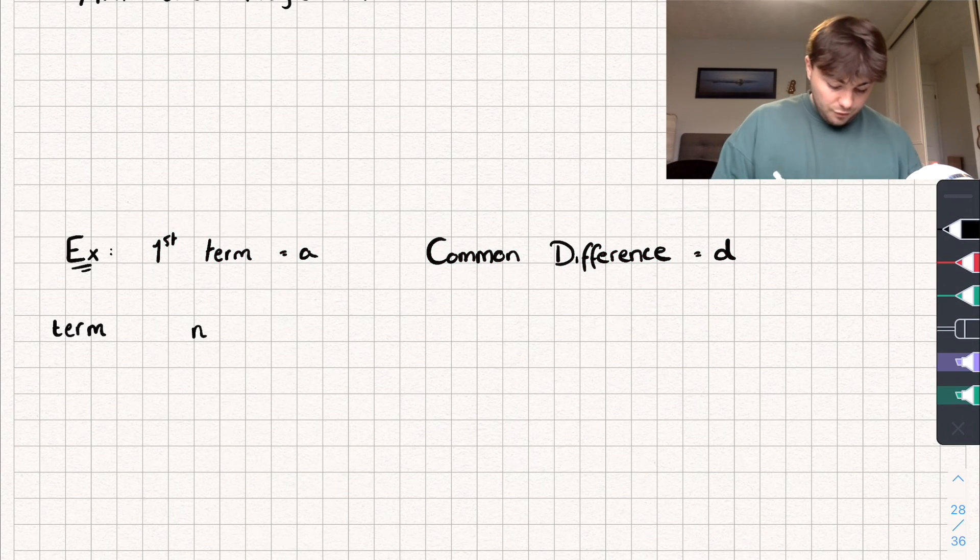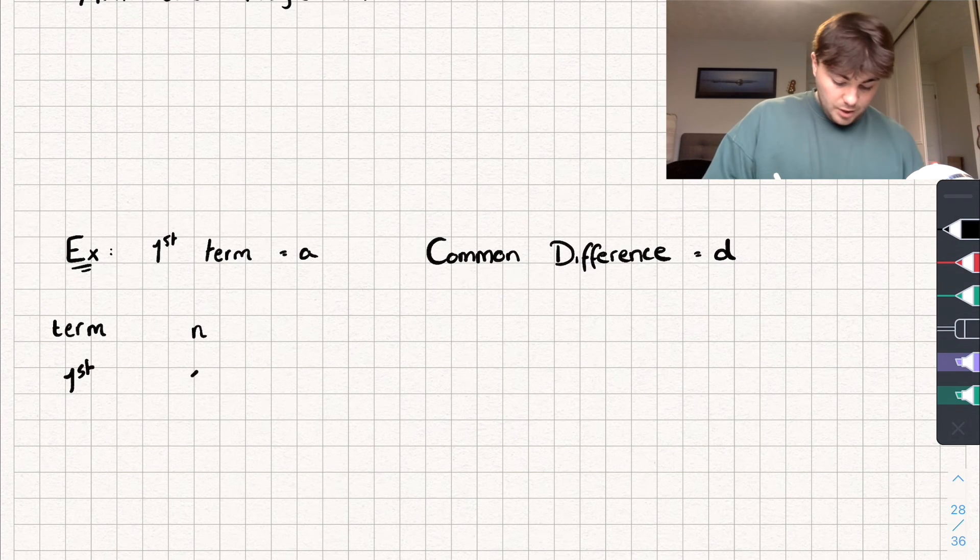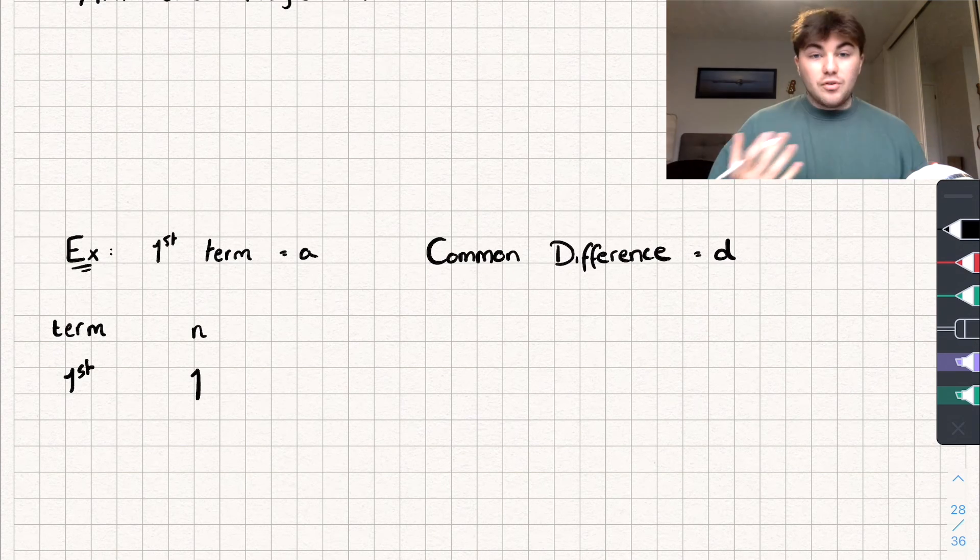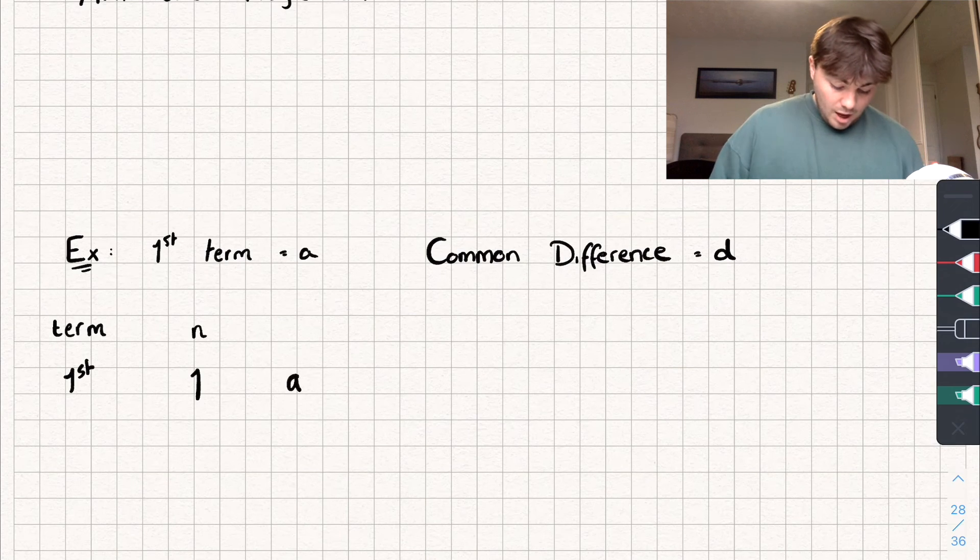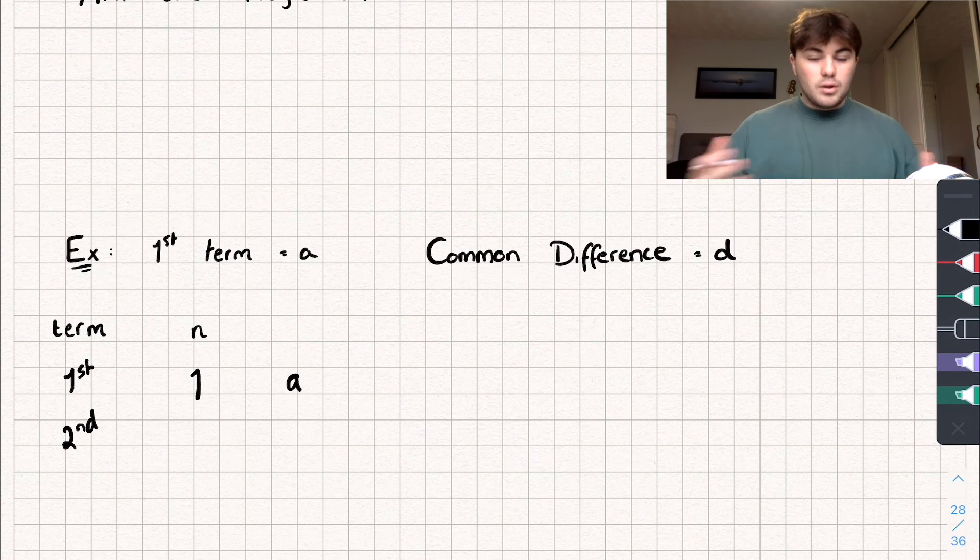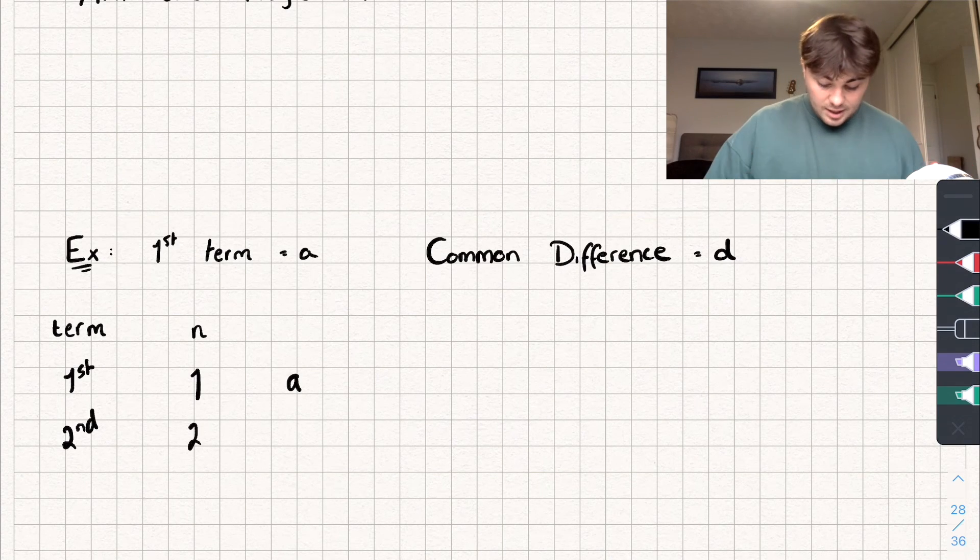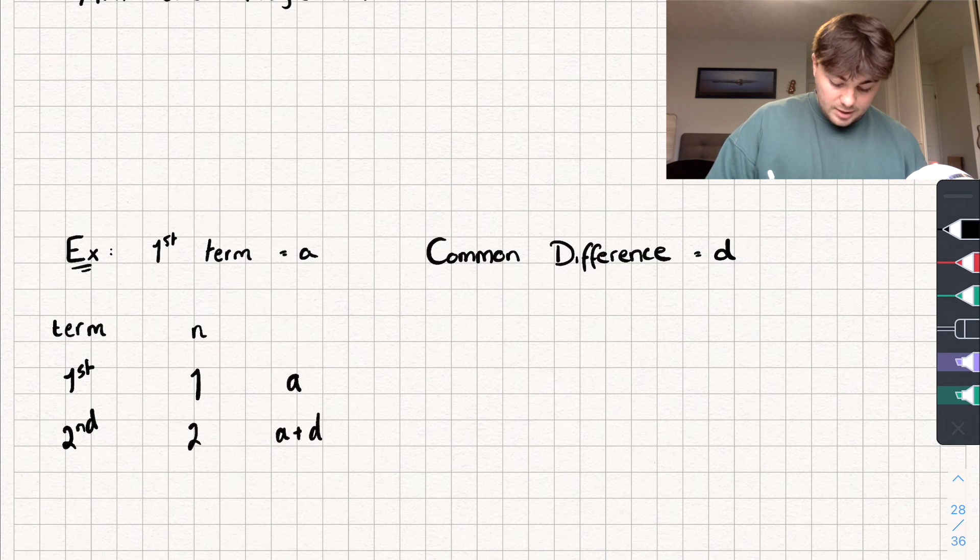Okay, I'm going to write this down. So the first term, let's write it here. That's when our n is equal to 1, isn't it? So when n is 1, well we're given the first term, it's a. How about the second term? Well that's going to be when our n is equal to 2 in our nth term. So I can write 2 here. And because the common difference is d, like I just said, the second term is going to be a plus d.